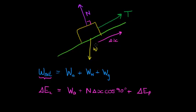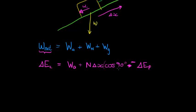The work done by the weight force or gravitational force — the component of the force doing work is the weight component parallel to the surface — it's in the opposite direction. So the angle between them is 180 degrees, which means cos of 180 is negative. This term cancels out, and we find that the work applied equals the change in kinetic energy plus the change in potential energy.